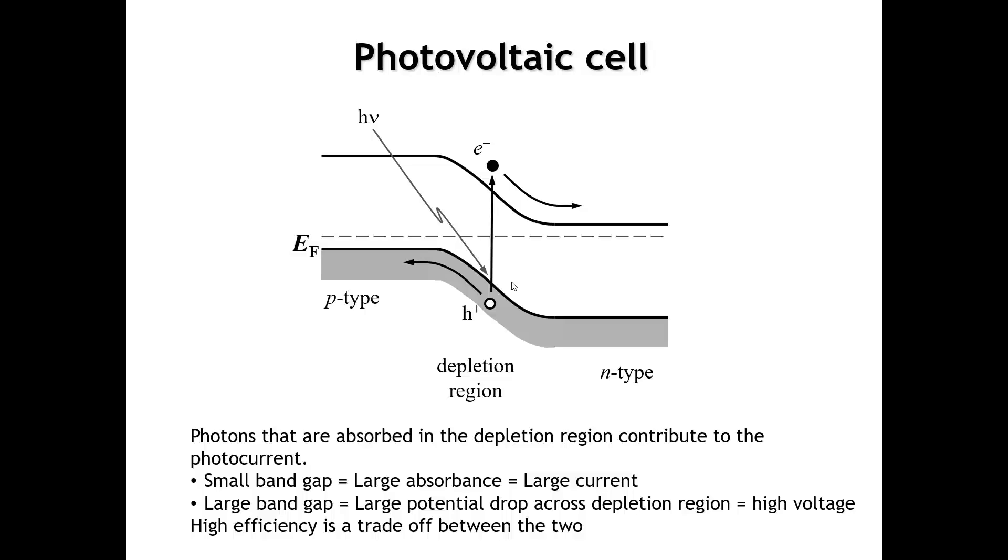The other device you can make from a P-N junction, if we operate it in the opposite sense, that is that we push electrons and holes into the depletion region with the voltage. And if we have a direct band gap semiconductor, you can get radiative recombination of the electrons and the holes. And so that's the principle of a light-emitting diode. So it's just going in the opposite direction of a photovoltaic cell.